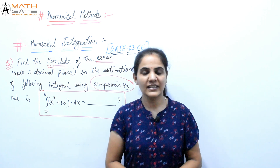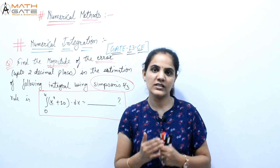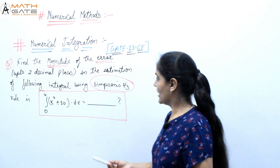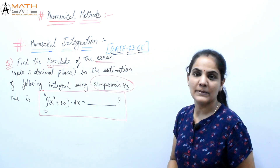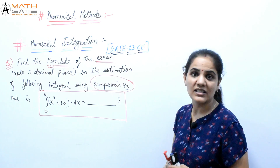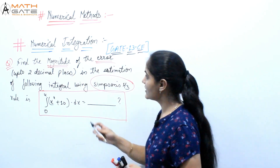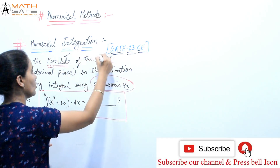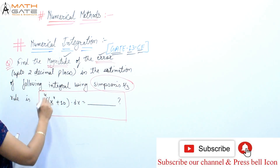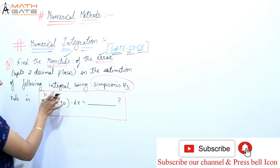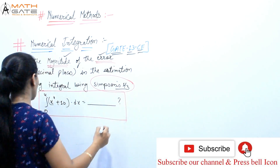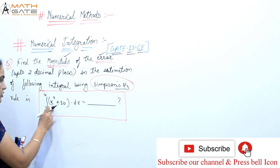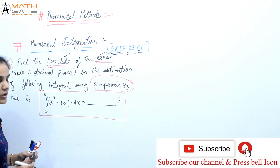Hello students, welcome to Math GATE. Let's discuss a few more GATE problems based on Simpson's method. This question has been asked in GATE 2013 Civil branch: find the magnitude of the error up to two decimal places in the estimation of the following integral using Simpson's 1/3rd rule — the integral from 0 to 4 of (x⁴ + 10) dx.